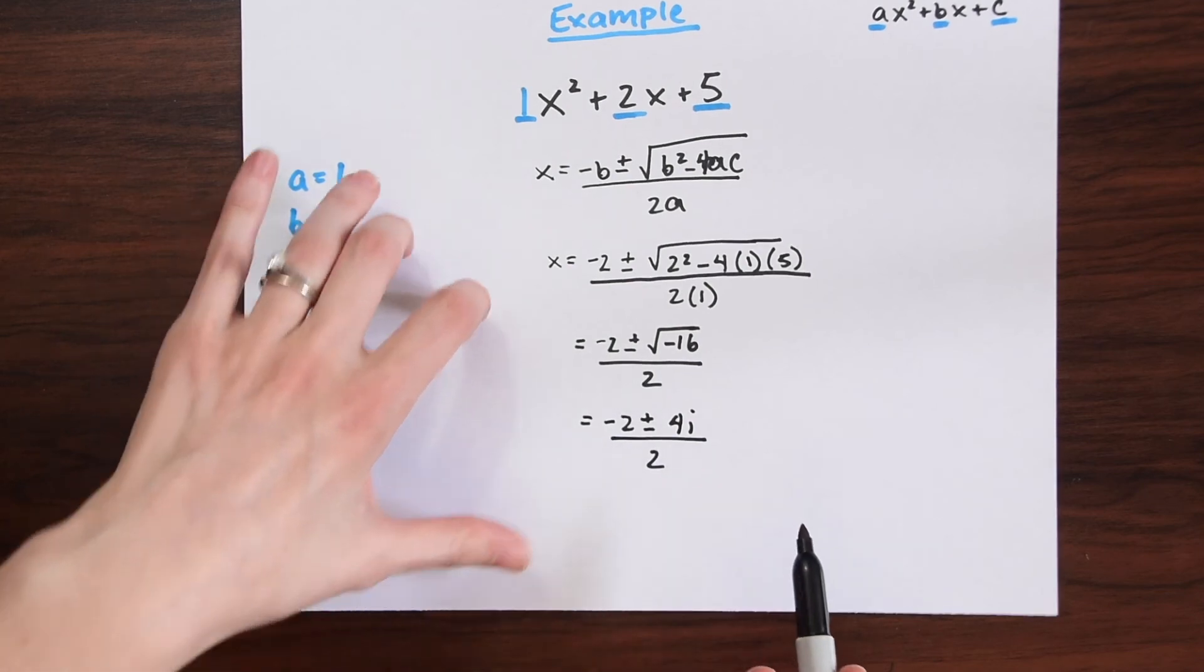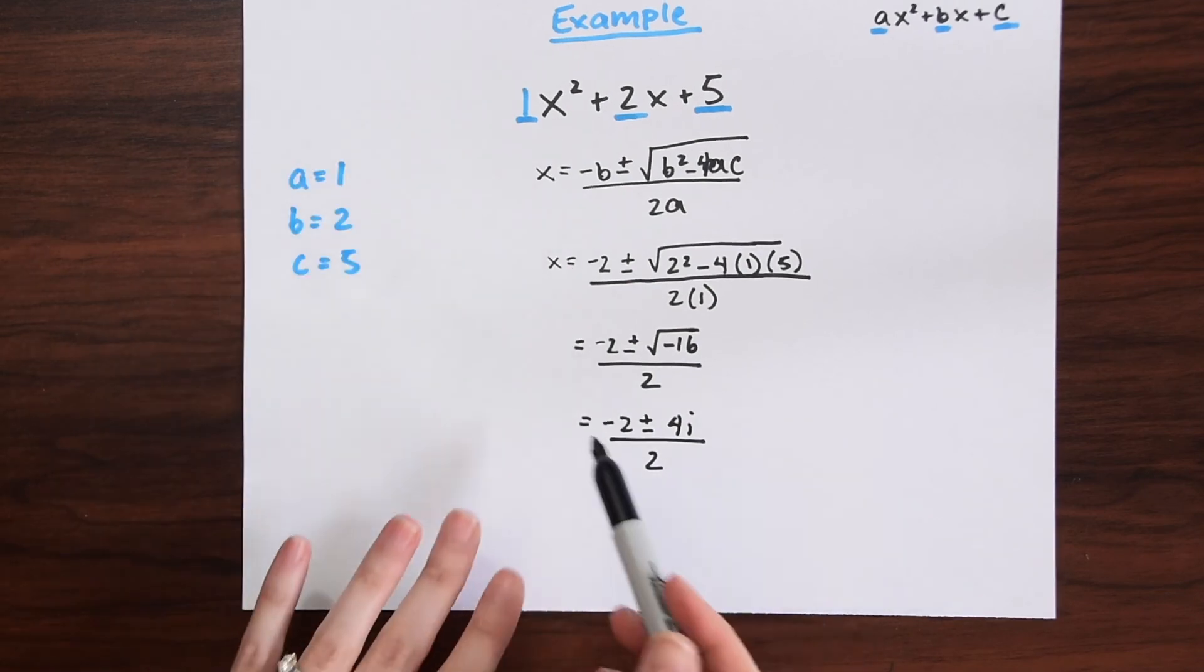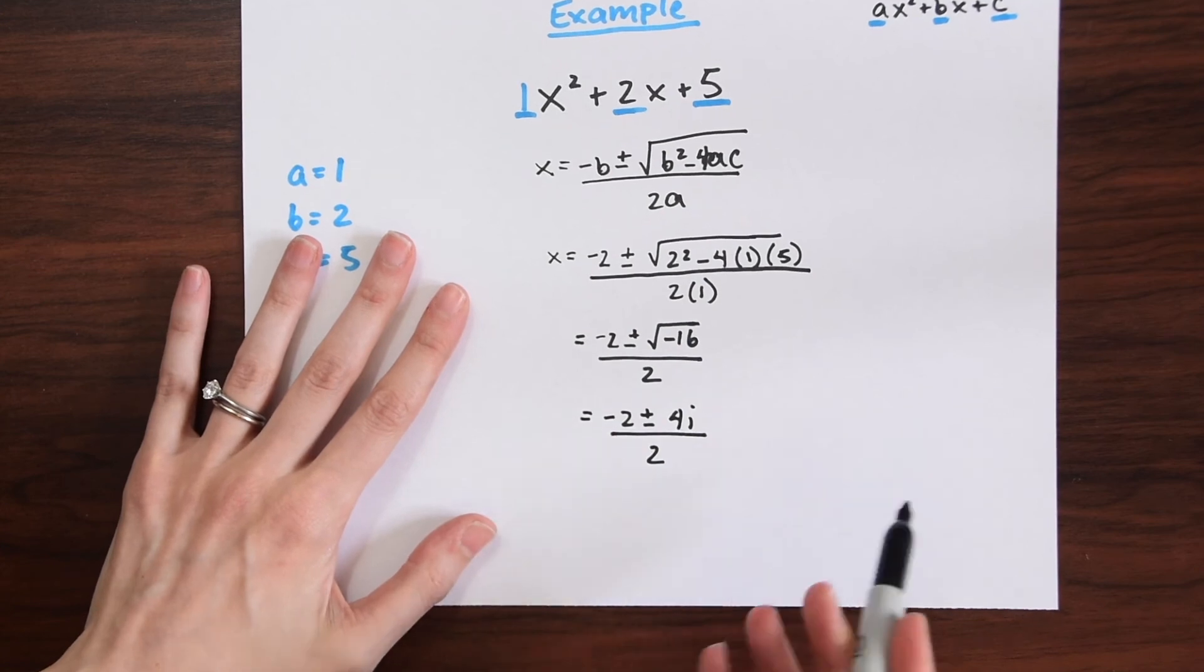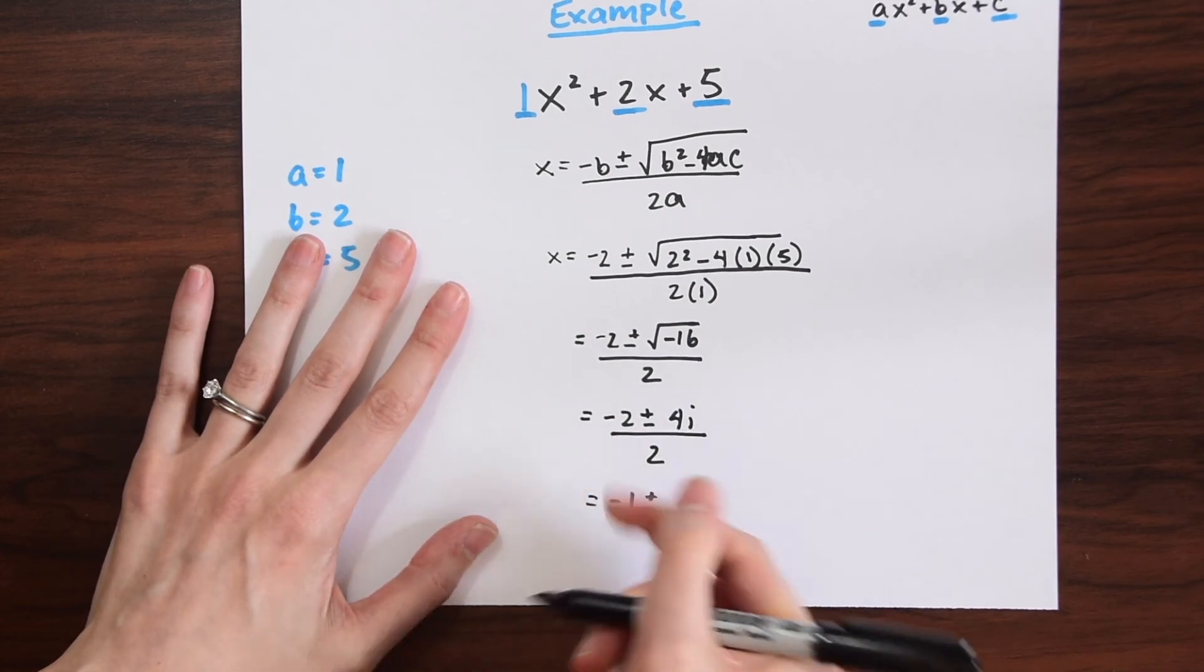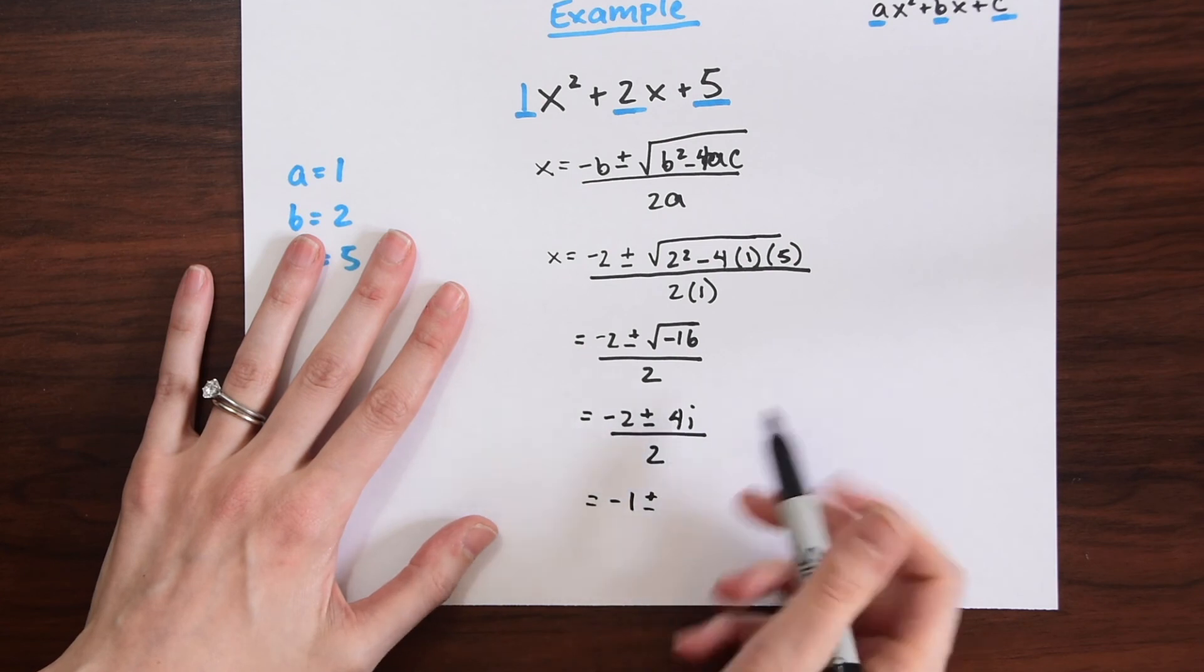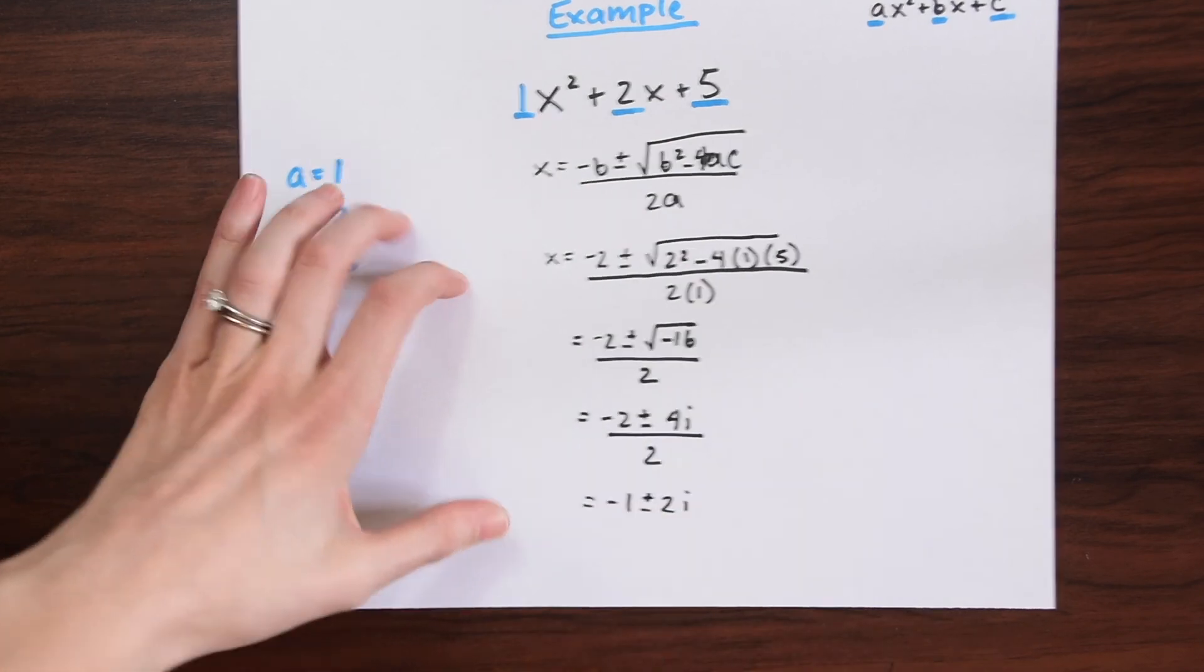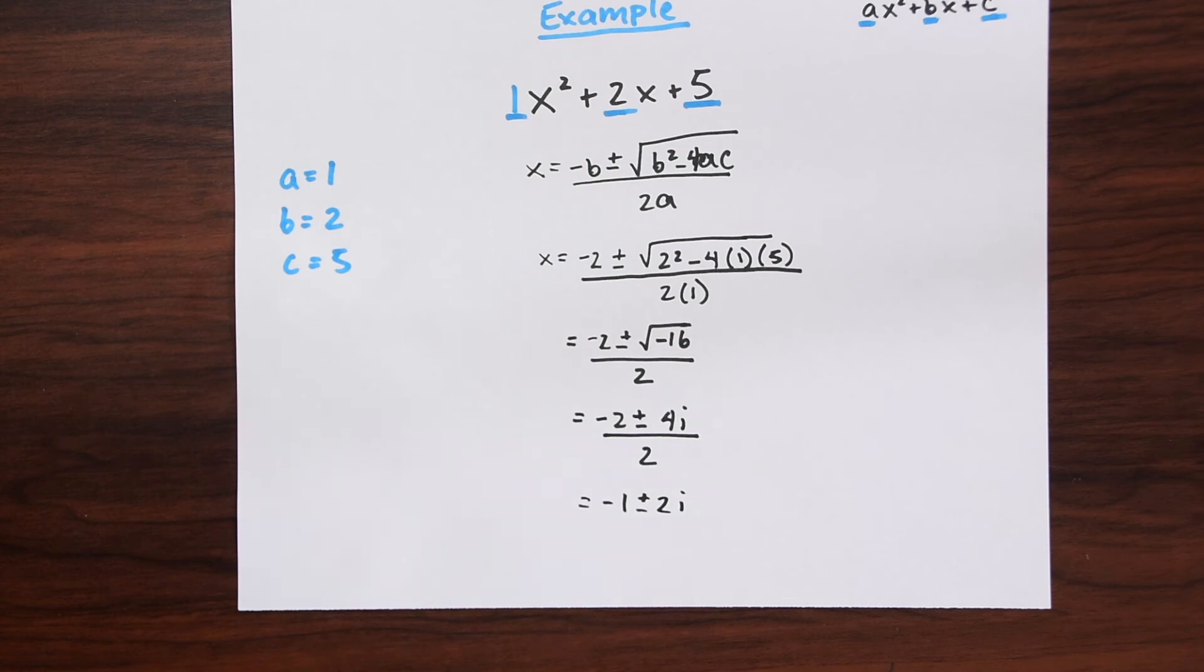These numbers are really nice to work with. Notice we can simplify this further. Negative 2 divided by 2 is just equal to 1, and then that plus or minus remains the same. And then 4 divided by 2 is 2 again, and we keep that i.